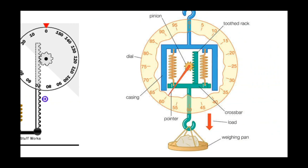In this spring scale, the load pulls down on the springs. The rack moves, causing the pinion to rotate. Since the pointer is attached to the pinion, its rotation will show the number on the dial.